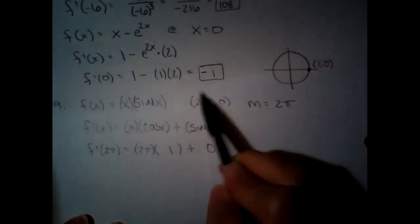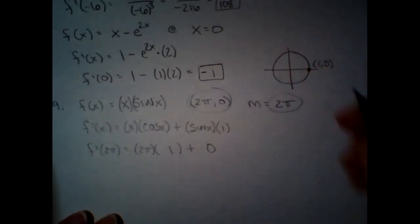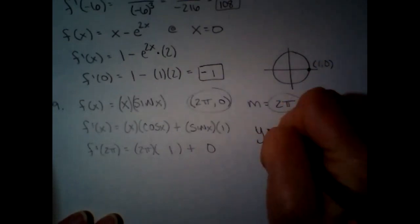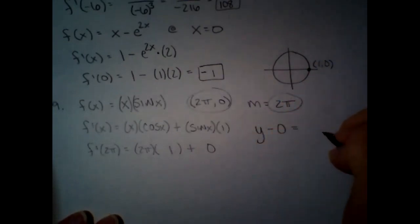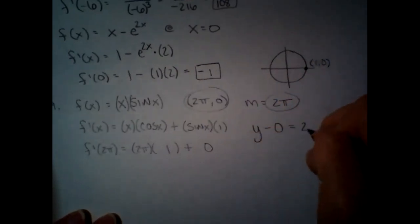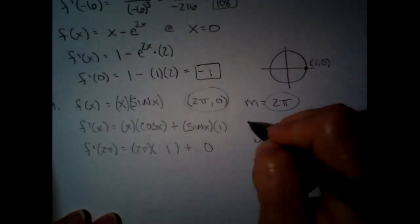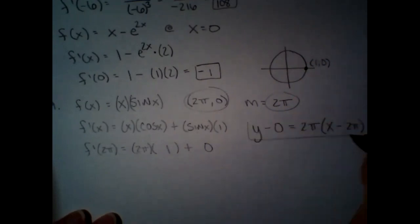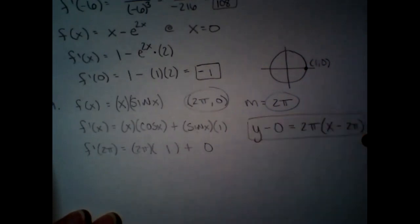So this is the point, this is the slope, and we're just going to put it together into the equation: y minus zero equals 2π times (x minus 2π). So that one did ask for the entire equation.